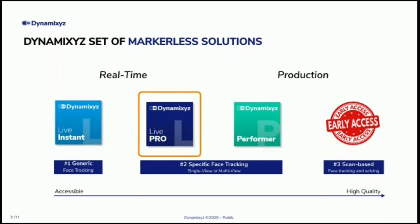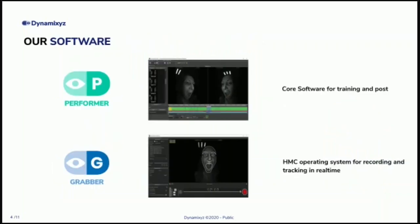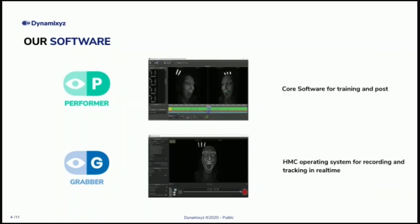Today we'll be using two of our software. The first is Performer — it makes it possible to train the system and post-process everything. Although we're doing mostly real-time today, we needed it for training. The second is Grabber, the operating system of our head-mounted camera system. It makes it possible to record and track in real time. We usually record at 120 frames per second, and real-time is achieved at 60.